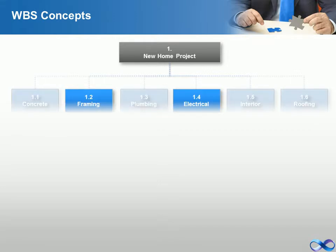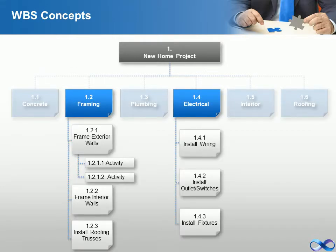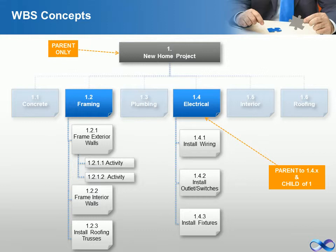A work breakdown structure element is any single component in the work breakdown structure diagram, and the component can be at any level. Types of components include: Parent — a higher level element in the work breakdown structure that is decomposed into two lower level elements. Child — a lower level element in the work breakdown structure that is rolled up into a single higher level element. Parent-child descriptions are relative: an element can be both a parent of lower level elements and the child of a higher level element. Note that 1.2x elements are children of 1.2, but they are parents to none. Activities are not a level in the work breakdown structure; they are only an indication that no further decomposition is needed.